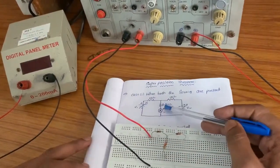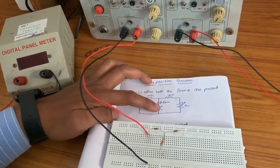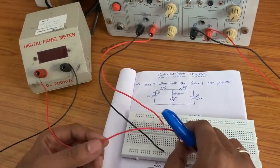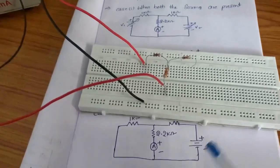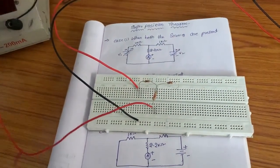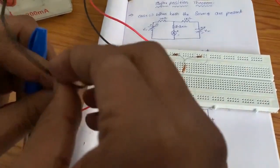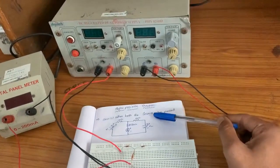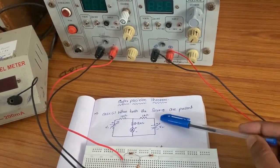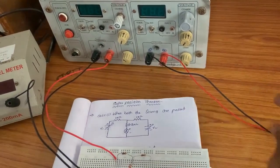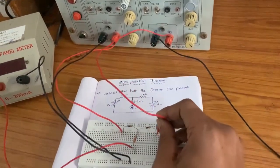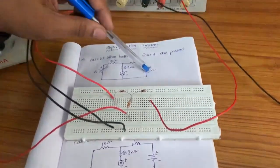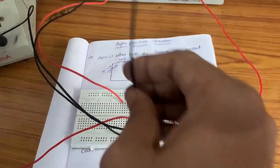Now we will connect the ammeter. The ammeter positive is connected to the 2.2 kilo ohm second terminal. Ammeter negative is connected to ground. Next, we will connect the second channel. Channel 2 RPS positive is connected to the 1 kilo ohm second terminal. RPS negative is connected to ground.